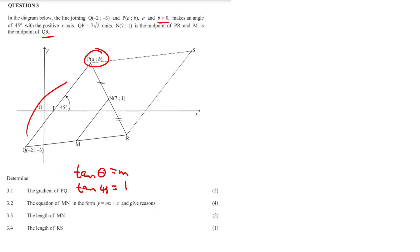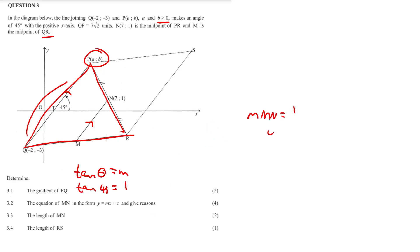Question 3.2: The equation of MN in the form y = mx + c, with reasons. MN is parallel to QP — by the midpoint theorem, in triangle PQR, M and N are midpoints, so MN is parallel to QP. Therefore the gradient of MN is also equal to 1.